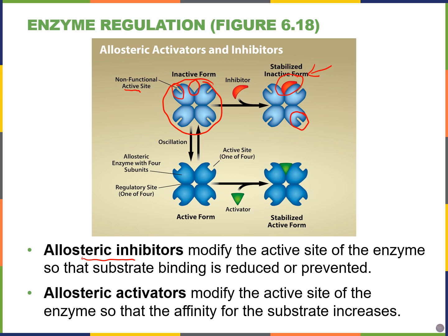We also have allosteric activators — proteins or molecules that bind to the allosteric site but optimize the active site so the substrate can bind. Allosteric activators promote the reaction and increase the likelihood for the substrate to bind to the active site, whereas allosteric inhibitors change or close the active site, reducing or even preventing the binding of the substrate.